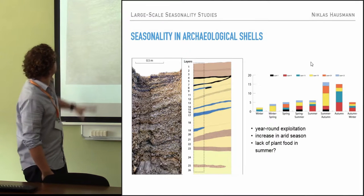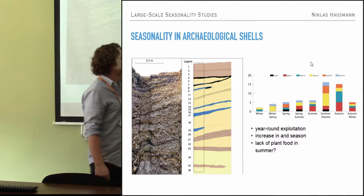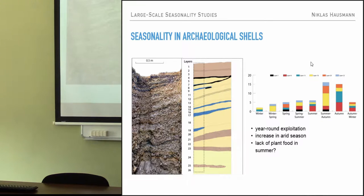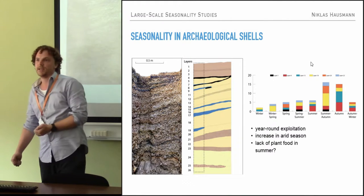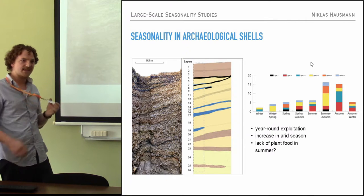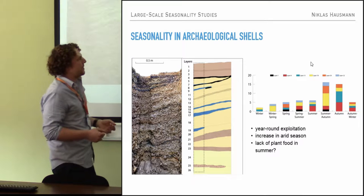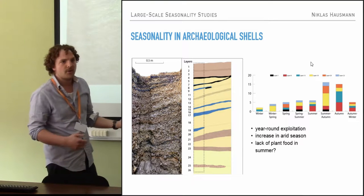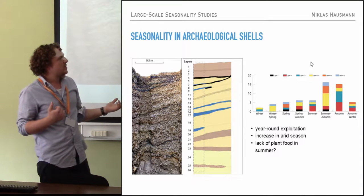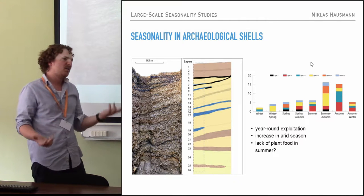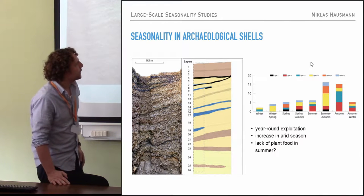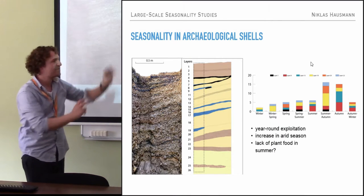We took shells from several layers in the deposit and distributed them on a scatter plot to see when they died. With about 66 shells, as you can see, we've got year-round exploitation — people were eating shells the whole time. And we can see there's an increase in summer. We don't really know what else they were eating, because there's almost no plant preservation, so we can't say definitively whether it's because of a lack of plants in summer when it gets more arid. But the pattern is there.